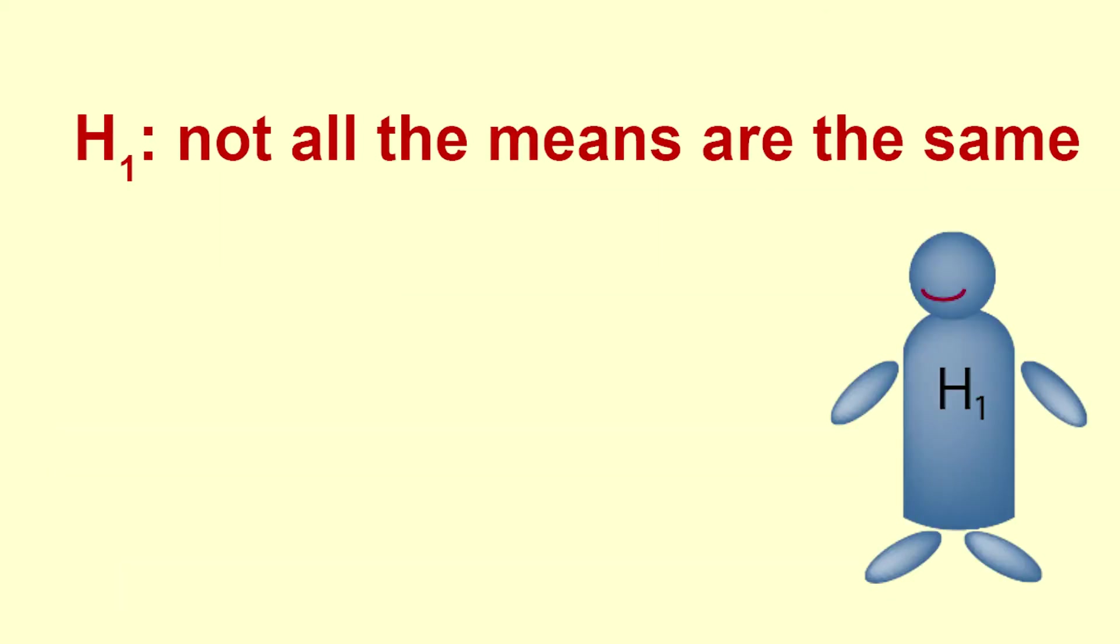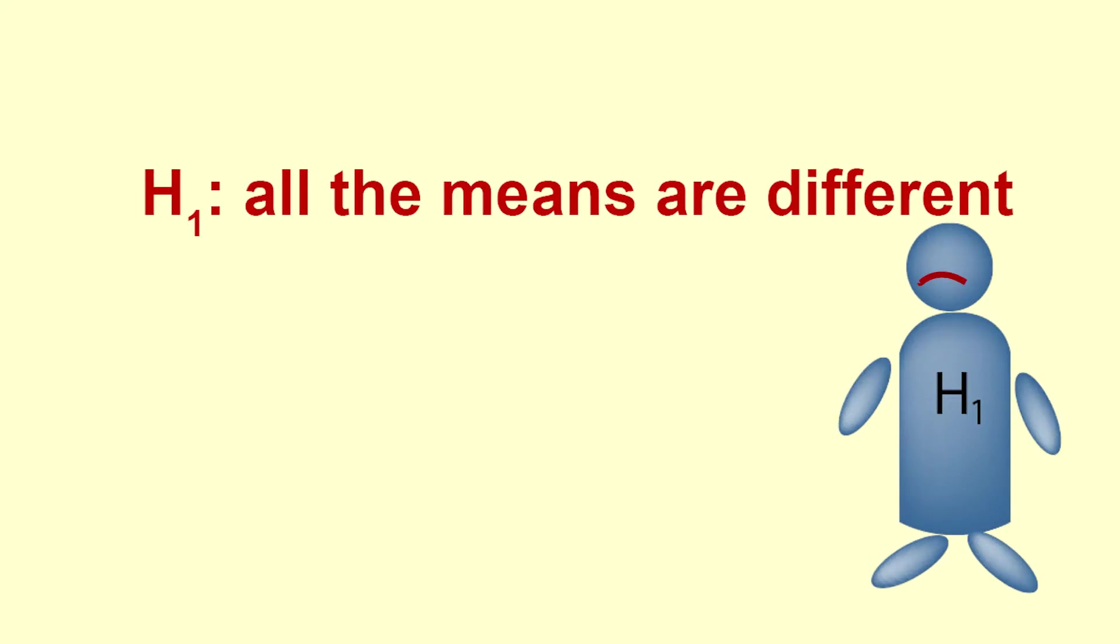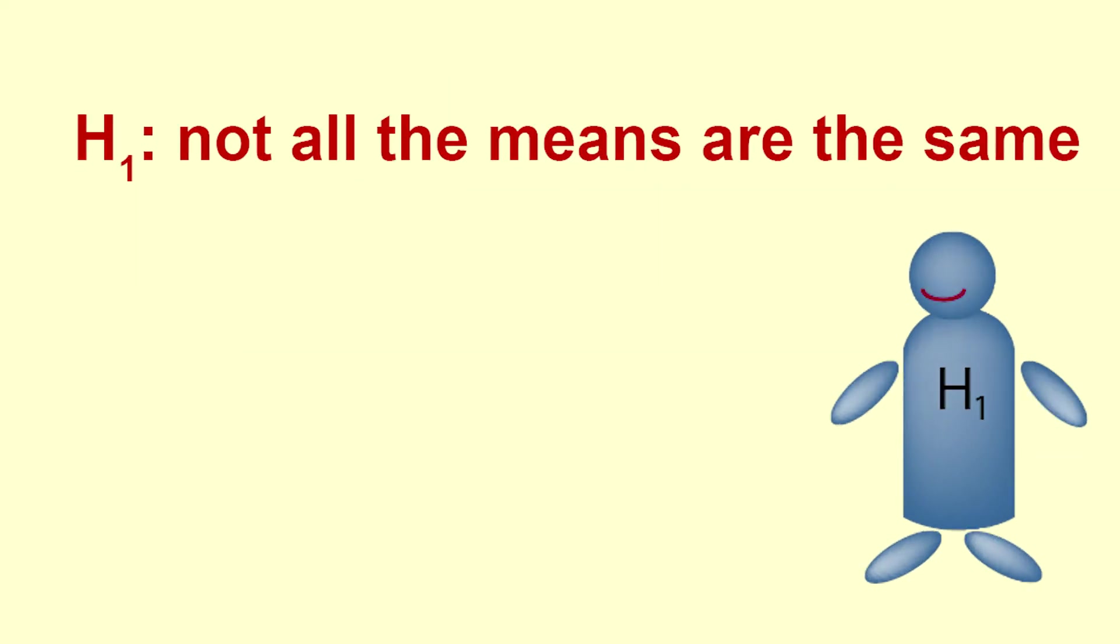The alternative hypothesis is that at least one of the means is different from the others. Note that the alternative hypothesis is not that all the means are different, but rather that they are not all the same.